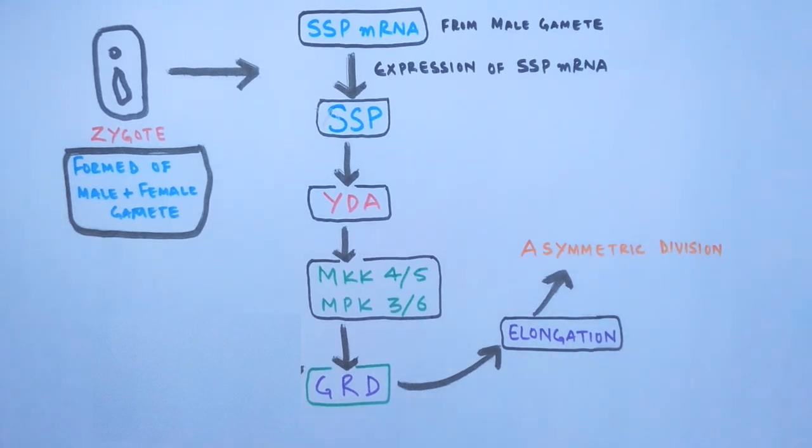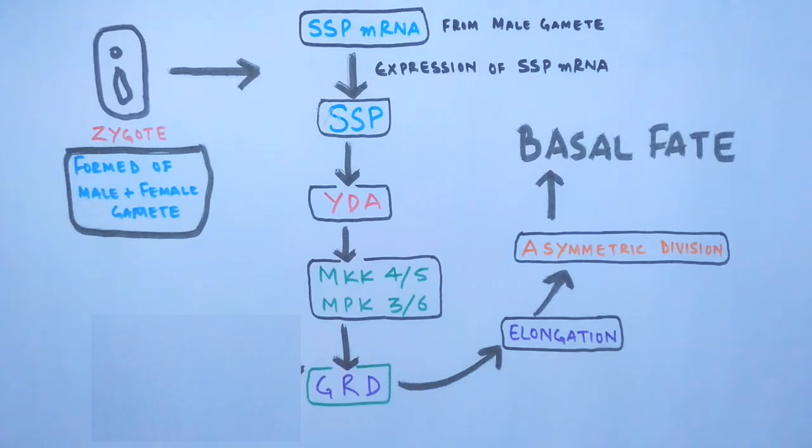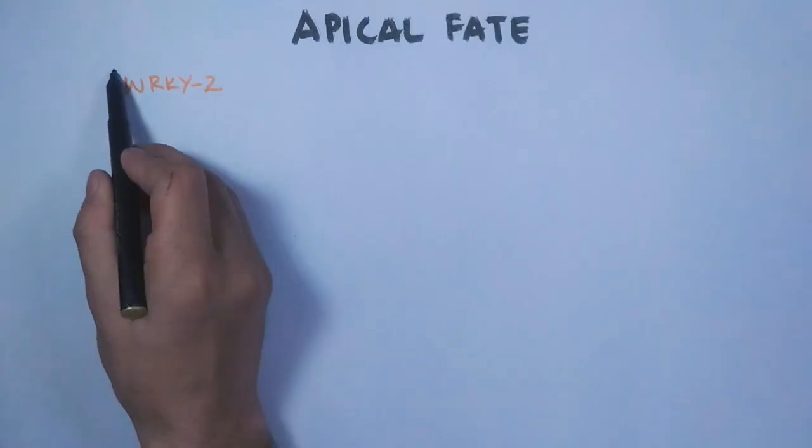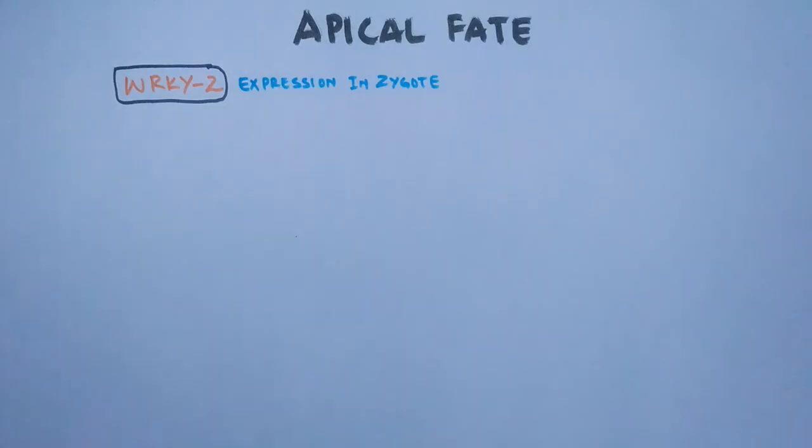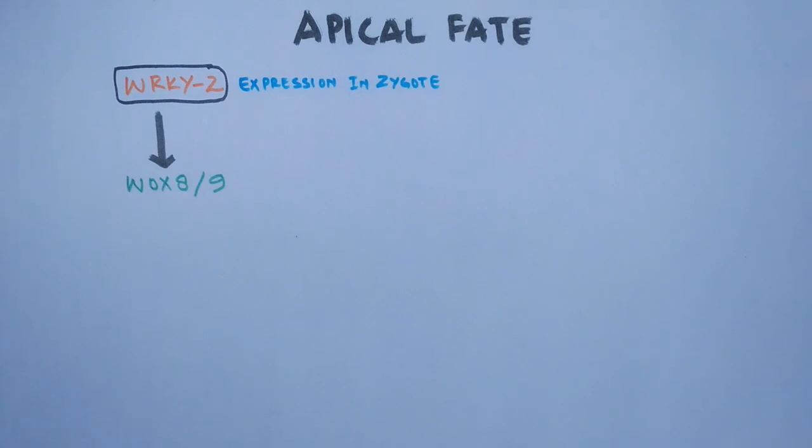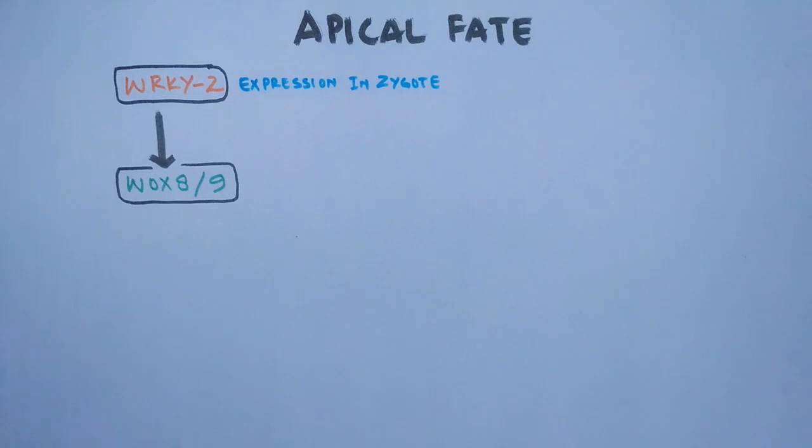All these events lead to the basal fate in cells. Now let's see how apical fate is driven within the zygote. Simultaneously, other factors are also activated. WRKY2 is expressed which leads to the expression of WOX genes. WOX8/9 genes are expressed and this WOX8/9 helps in the basal fate determination.